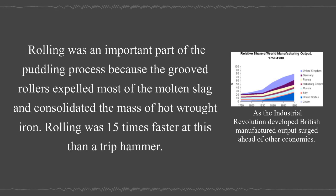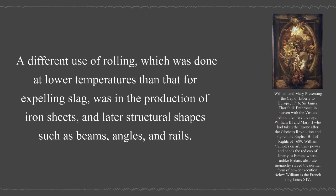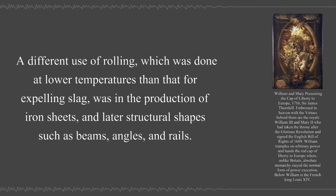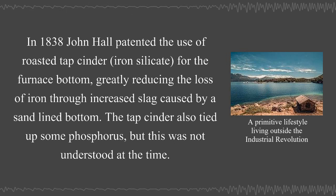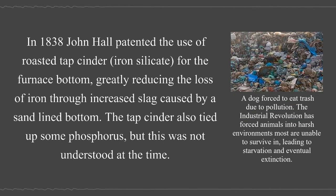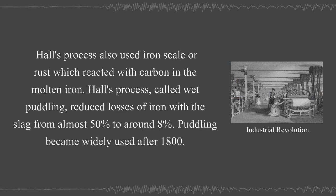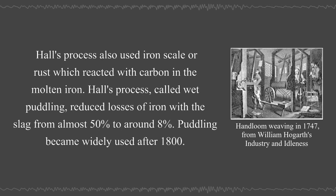Rolling was an important part of the puddling process because the grooved rollers expelled most of the molten slag and consolidated the mass of hot wrought iron, and was 15 times faster than a trip hammer. Rolling at lower temperatures was also used in the production of iron sheets and later structural shapes such as beams, angles, and rails. The puddling process was improved in 1818 by Baldwin Rogers, and in 1838 John Hall patented the use of roasted tap cinder for the furnace bottom, greatly reducing the loss of iron through increased slag. Hall's process, called wet puddling, reduced losses of iron with the slag from almost 50% to around 8%. Puddling became widely used after 1800.